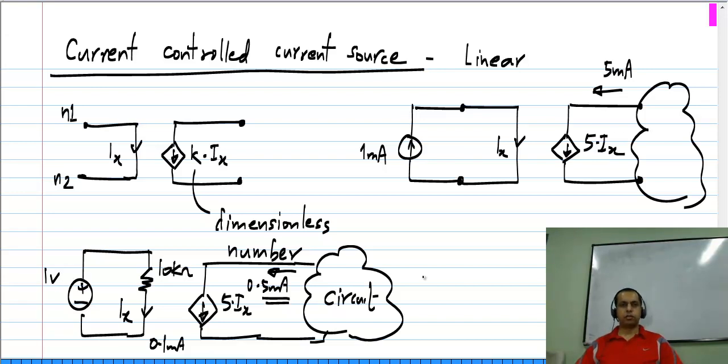All these control sources, as I mentioned, are unilateral. That is, you have a controlling quantity that results in the controlled quantity; you cannot use it in the other direction.